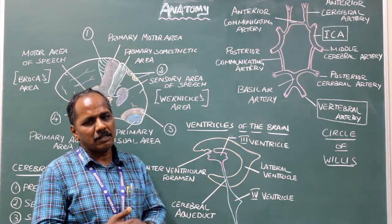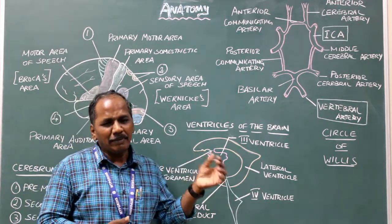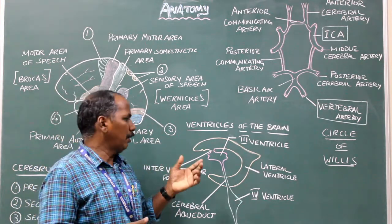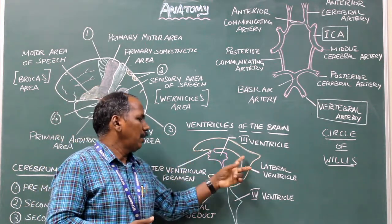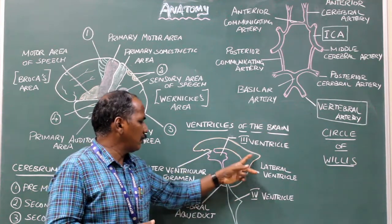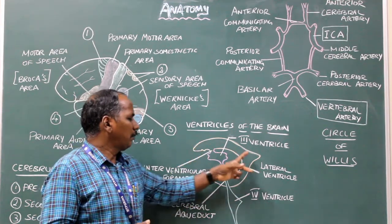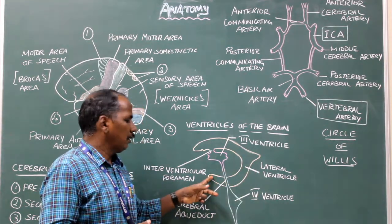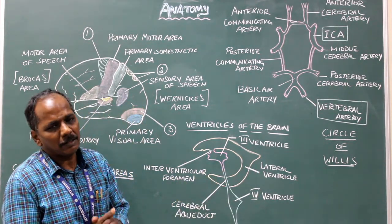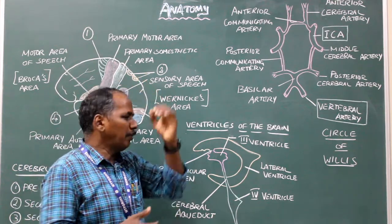Lateral ventricles. It is the cavity present in the two cerebral hemispheres. It has a body with three projections known as anterior horn, posterior horn and inferior horn. There are two lateral ventricles, one in each cerebral hemisphere.